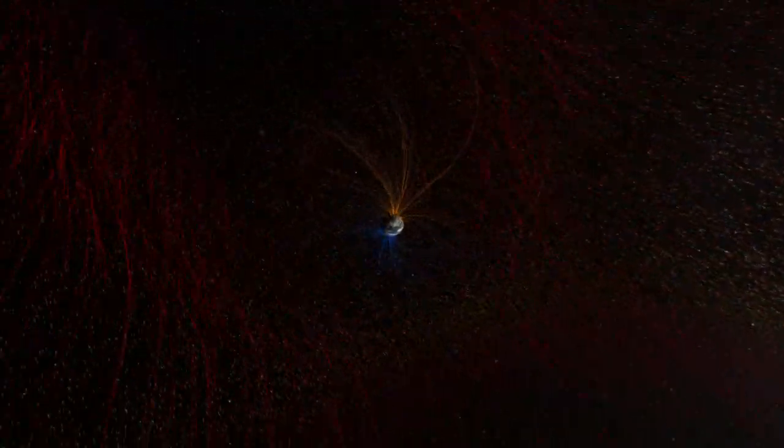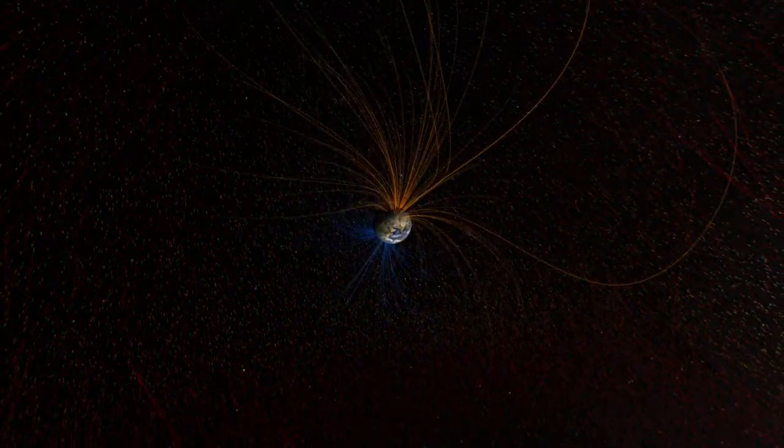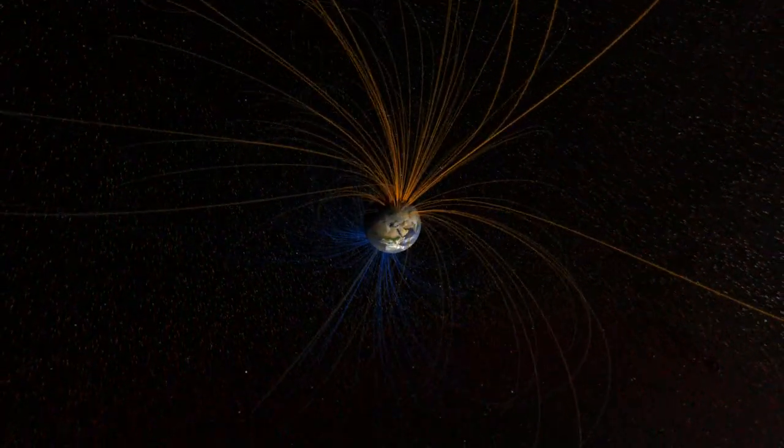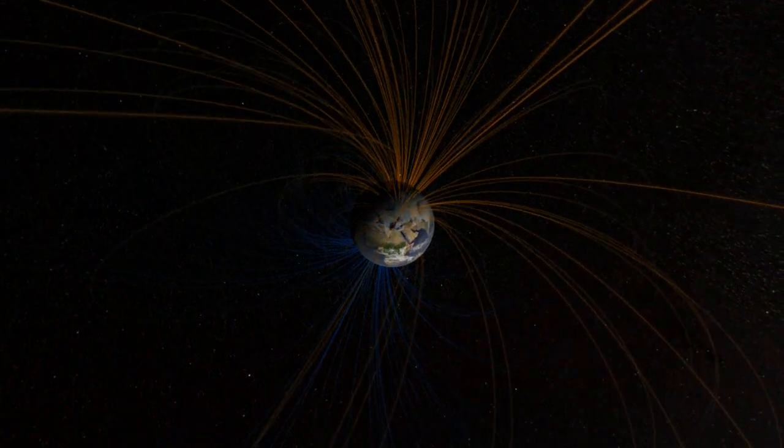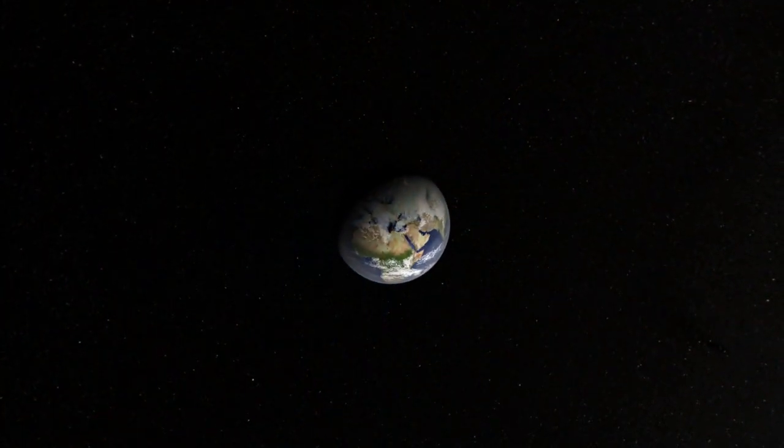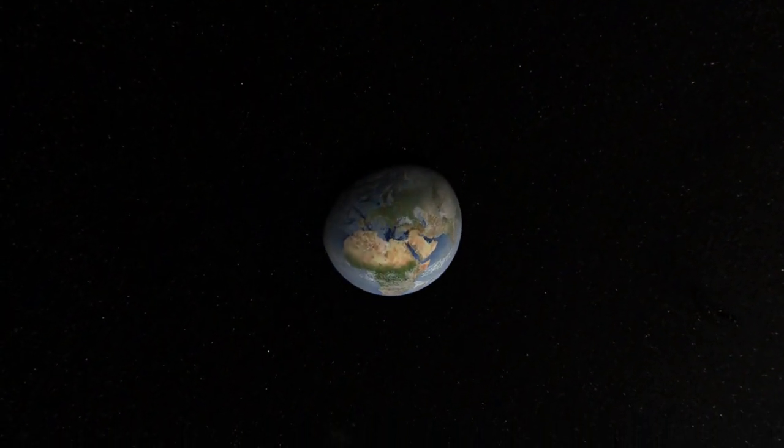In fact, that's just our first line of defense. Much of the solar energy that gets through is reflected back to space by clouds, ice, and snow.